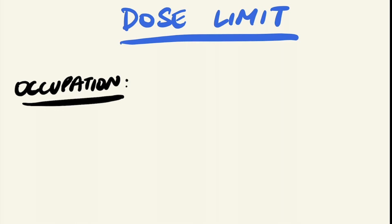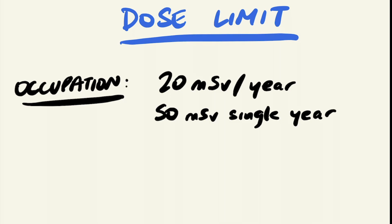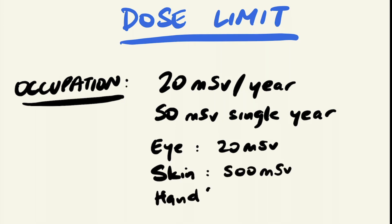For workers with occupational exposures, this is 20 millisieverts per year, averaged over 5 calendar years, or 15 millisieverts in 1 single year. There are also equivalent occupational dose limits for the eye, so 20 millisieverts in a year; skin which is 500 millisieverts in a year; and hands and feet which is 500 millisieverts in a year.